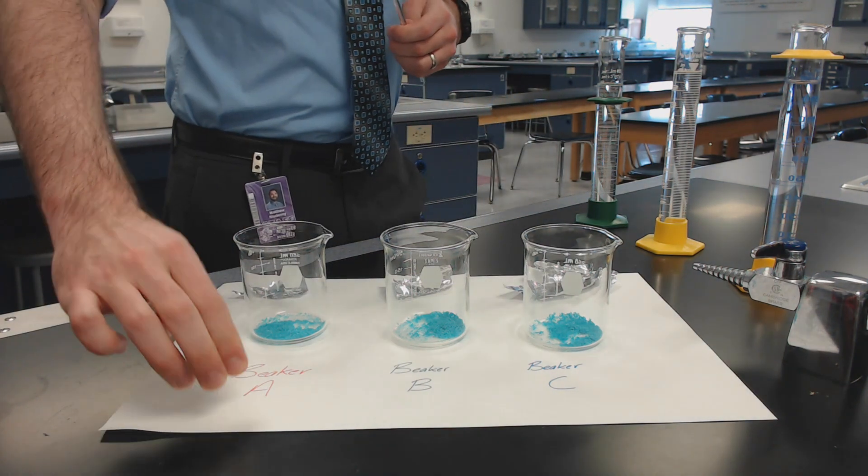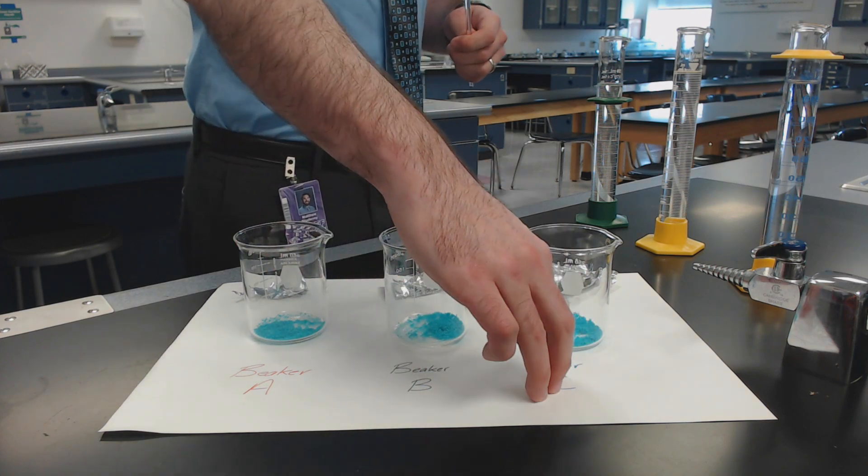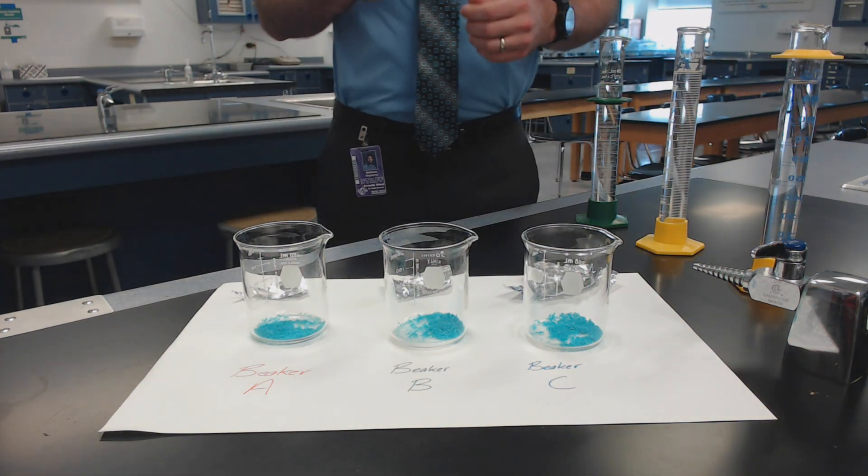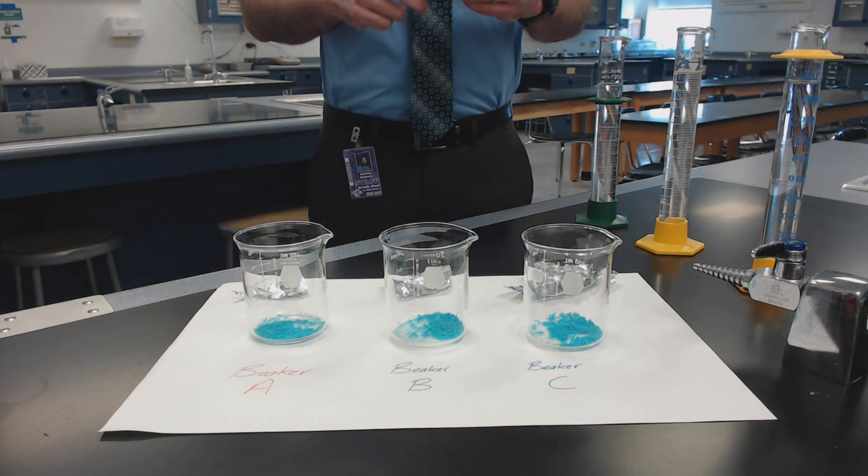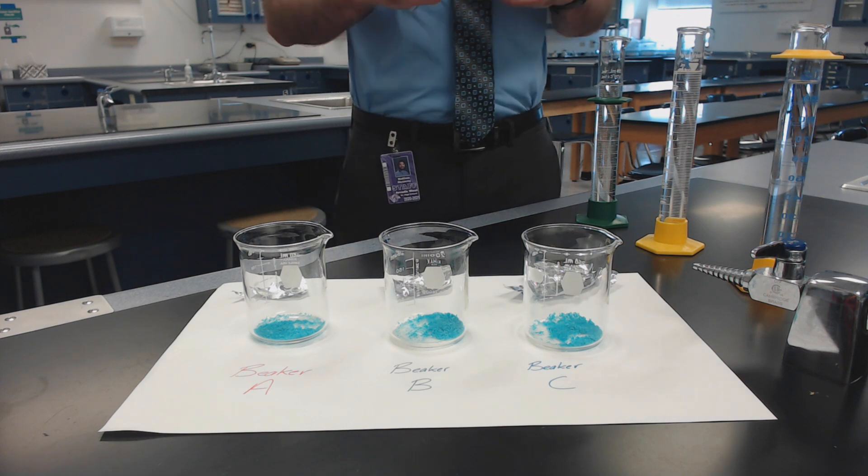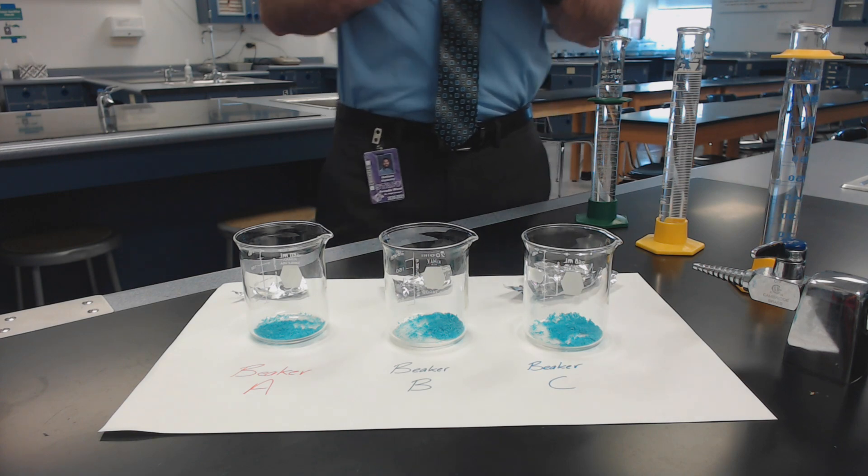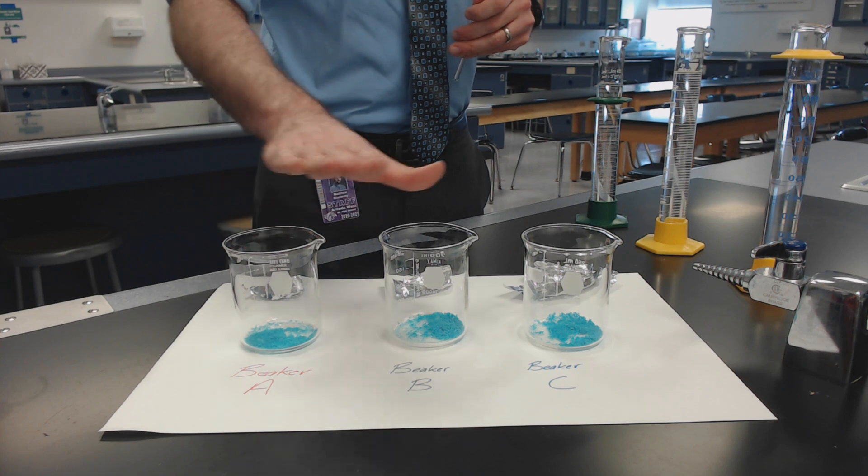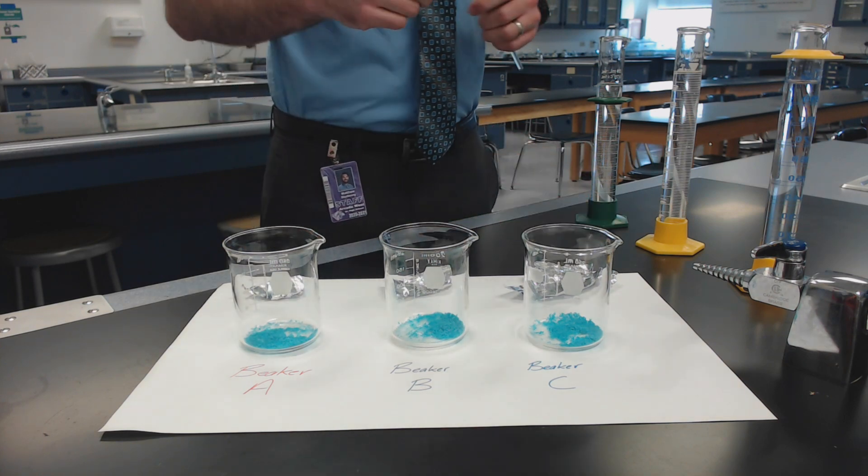This is beaker A, beaker B, and beaker C. Now each of you might have a different version of the lab, so the starting amounts are going to be dependent upon which version of the lab you have. However, the amount of the copper chloride in each of these beakers is the same.